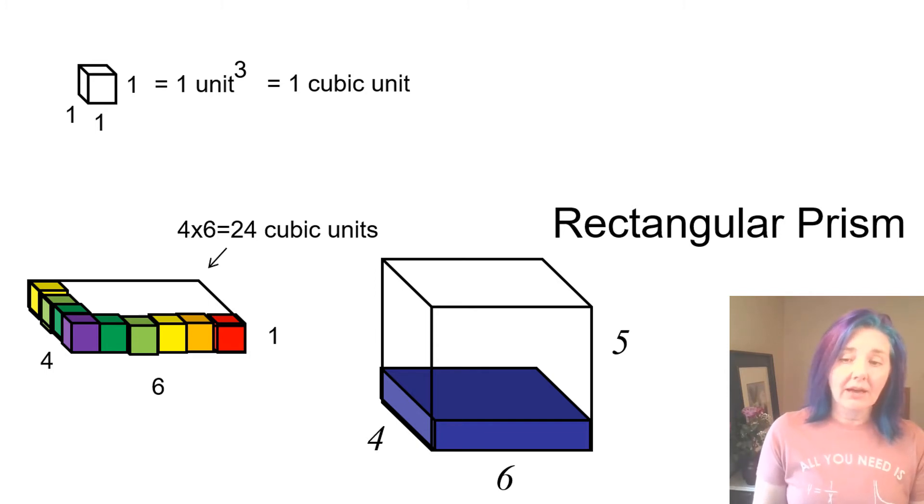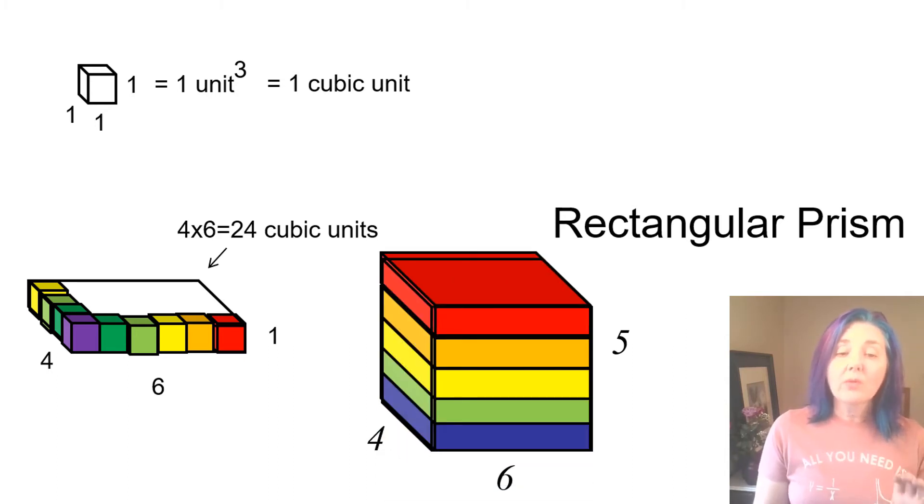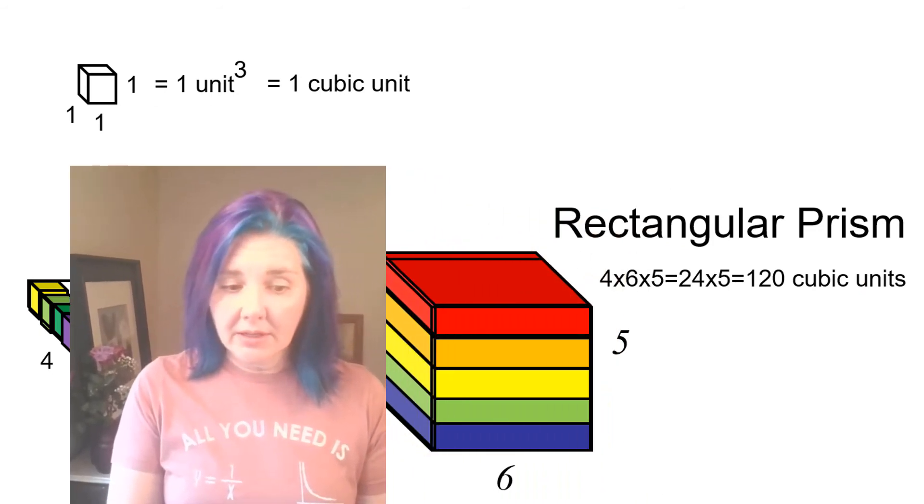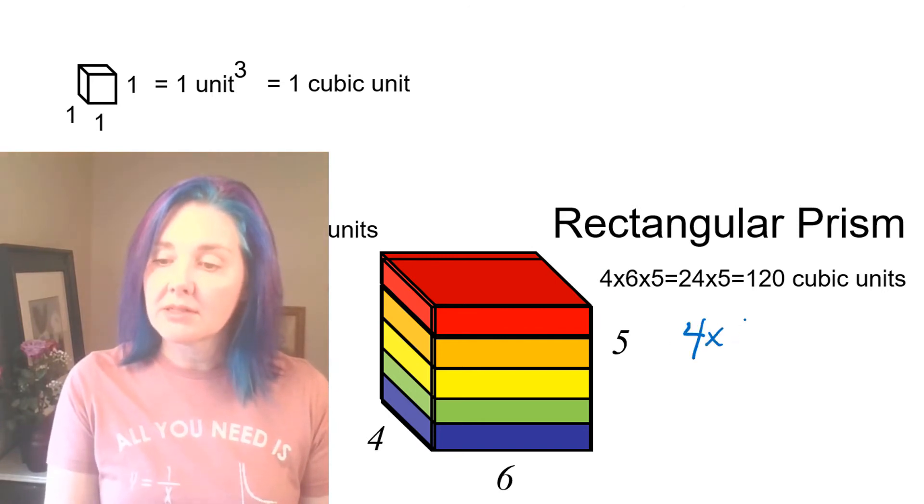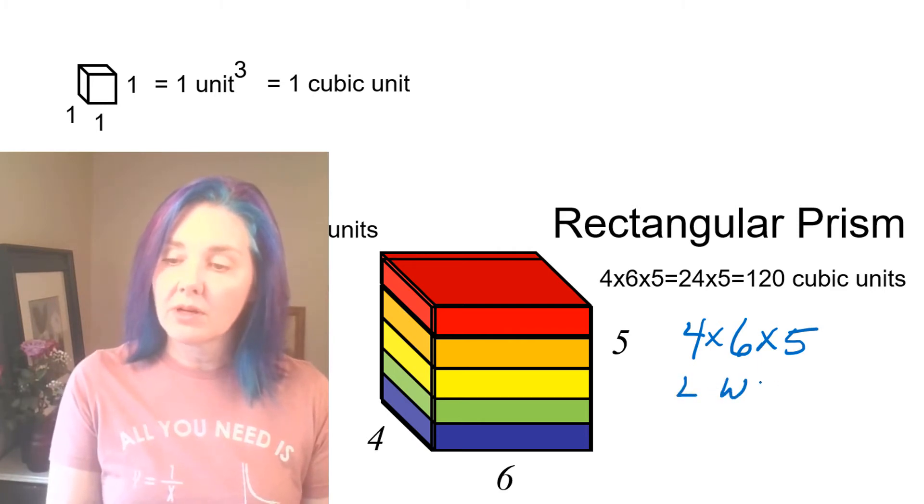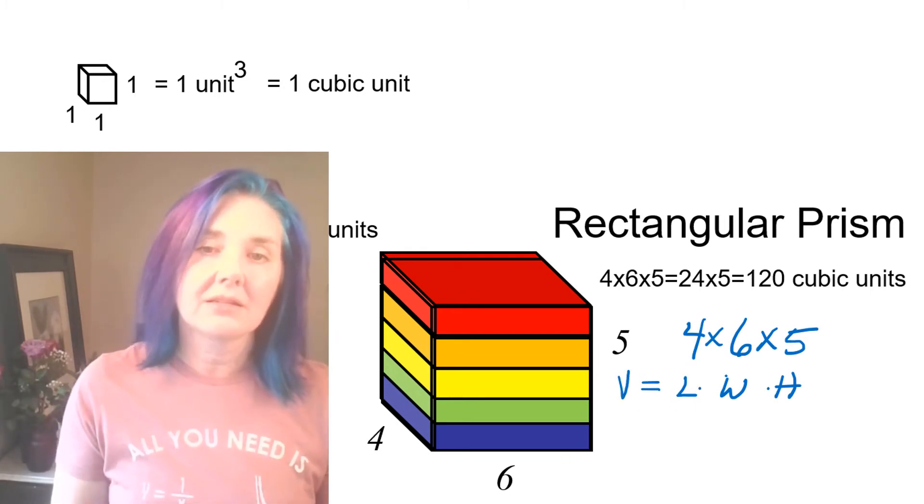But how many slices do we have? The height tells us that we have five slices. So that means the total number of little cubes that would fill this box or find the capacity of this rectangular prism is going to be five times the 24 cubic units in each one. So our total volume is 120 cubic units. Now that number can be found by multiplying together the three dimensions, the four times the six times the five, which we can think of as length times width times height. So our volume of any box is going to be length times width times height.